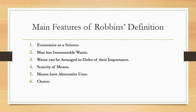Number four, scarcity of means. Whereas wants are unlimited, the means to satisfy them are relatively limited. The means refer to goods and services or the resources which are used to satisfy wants. Means which are scarce may involve time, energy, money, manpower, material and other productive resources at our disposal. If these means were abundant, there would be no economic problem. Since means are scarce, one is forced to postpone some of his wants according to priorities.